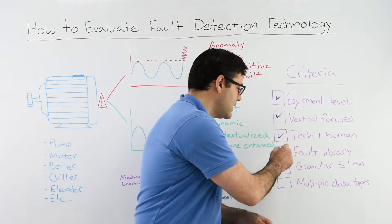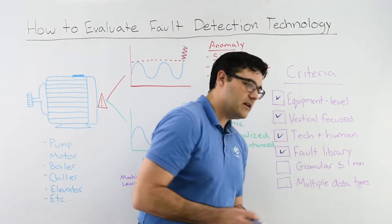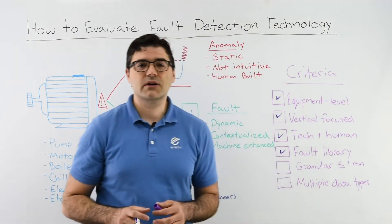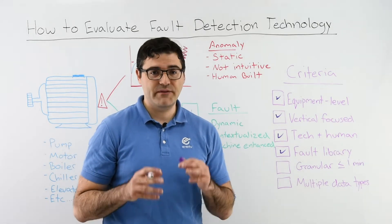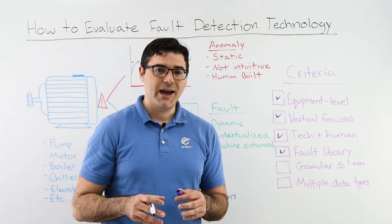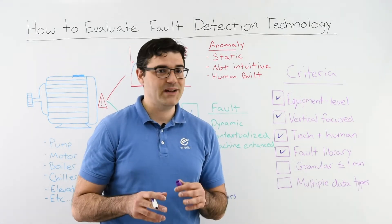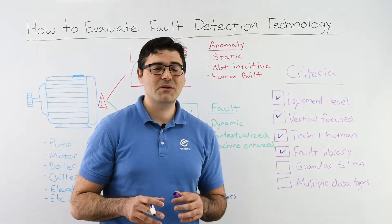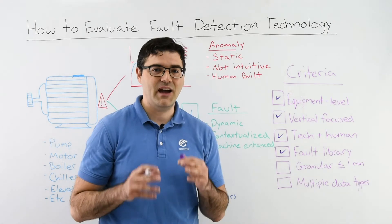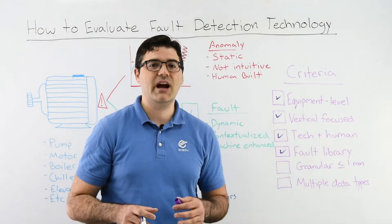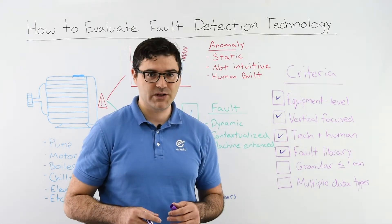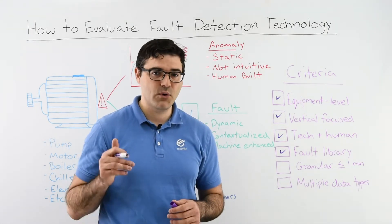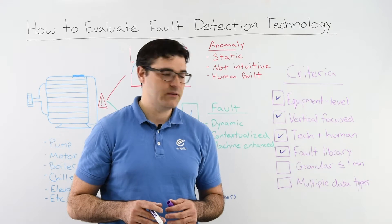Number four: fault library. You want to make sure that they understand the kinds of issues you have in your building, and that they have not just one, two, or three, but dozens of types of different scenarios to help you optimize operations and avoid potential issues.